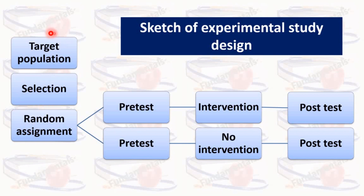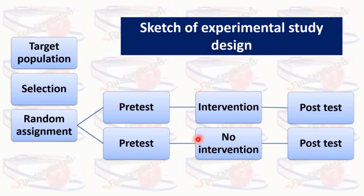You select the sample from the targeted population and then randomly assign the selected population into two groups: one for intervention and one for no intervention. Suppose counseling is your intervention for some disease. You conduct the pre-test — assessing the knowledge of that group before the intervention — then you provide the counseling to the intervention group and not to the other group. After providing the counseling, you conduct the post-test from both groups at the same time and compare the results of the two groups.